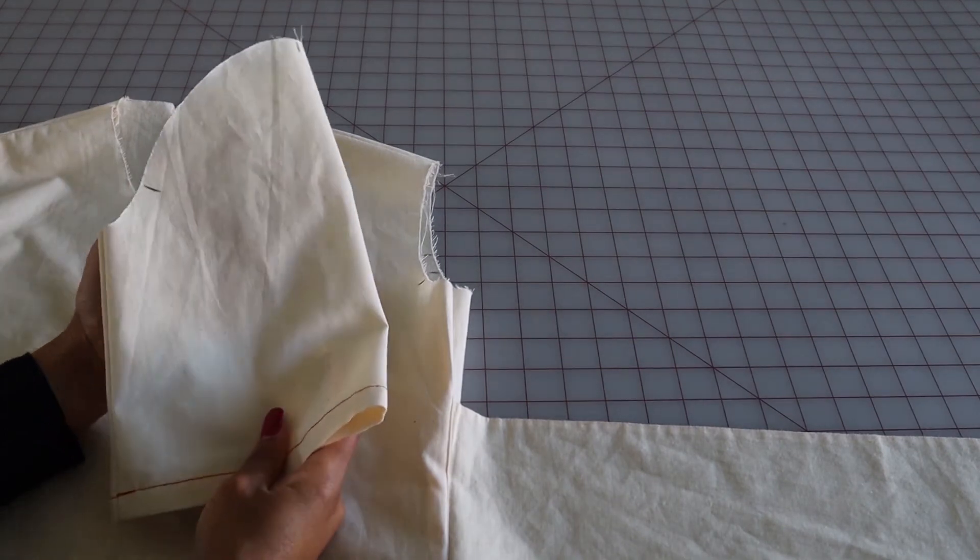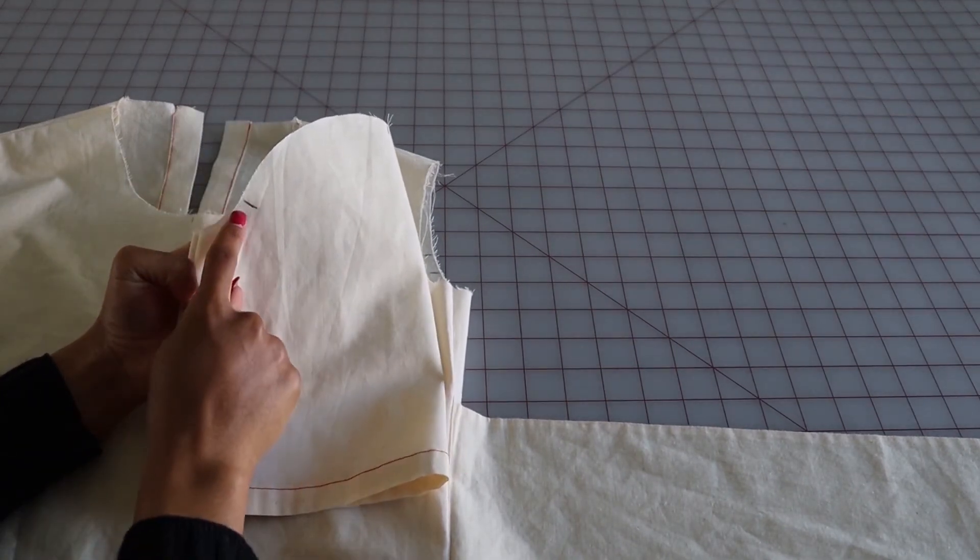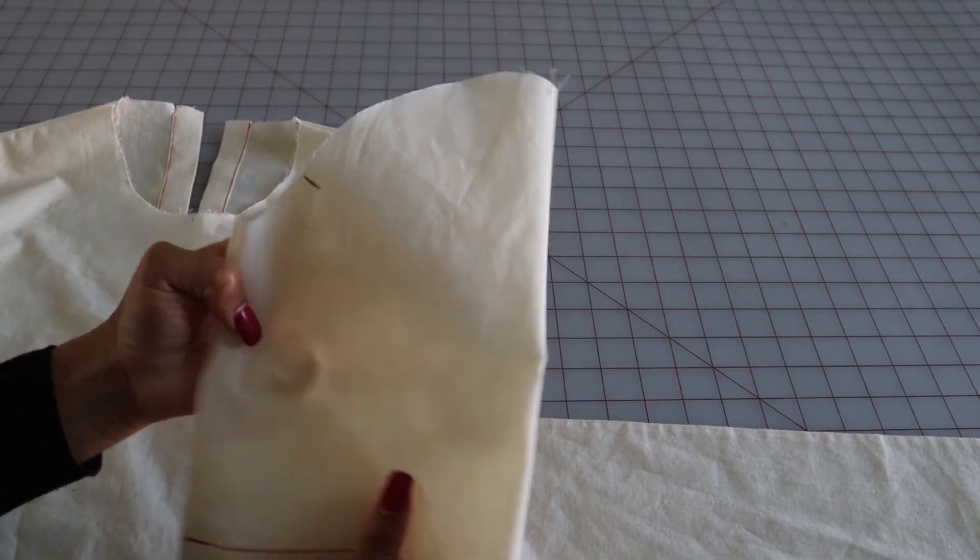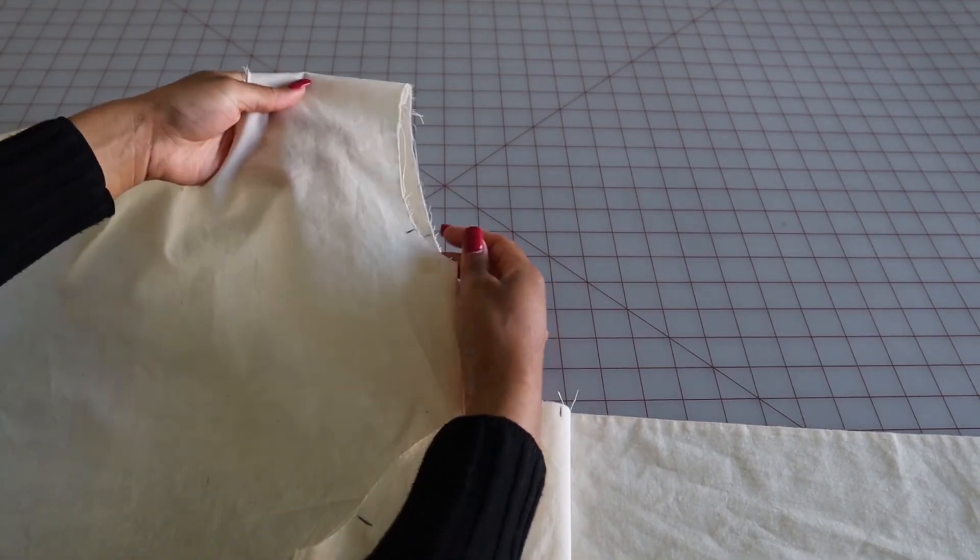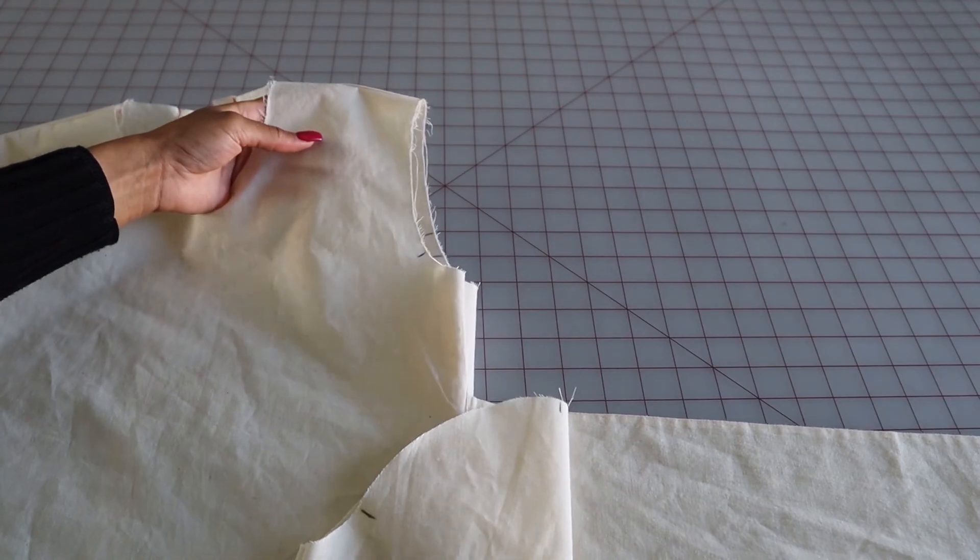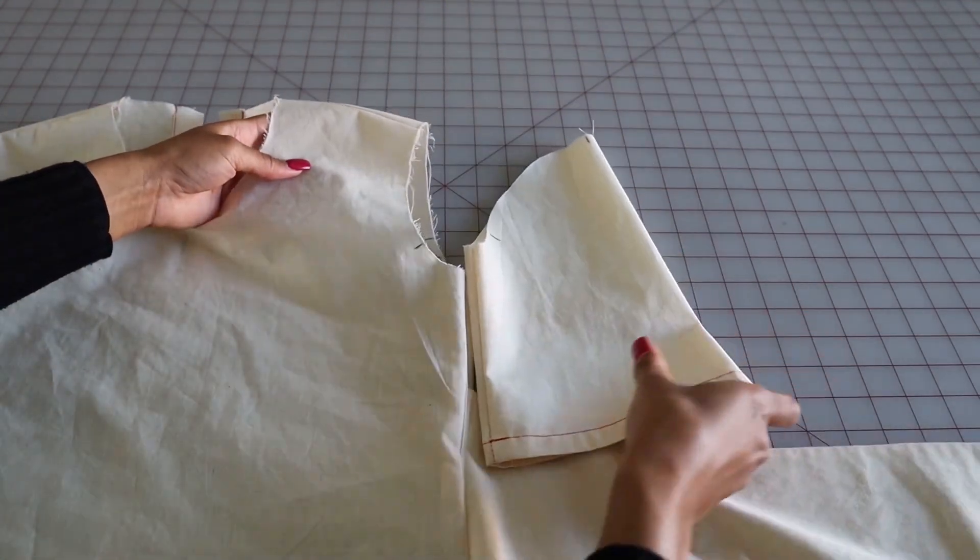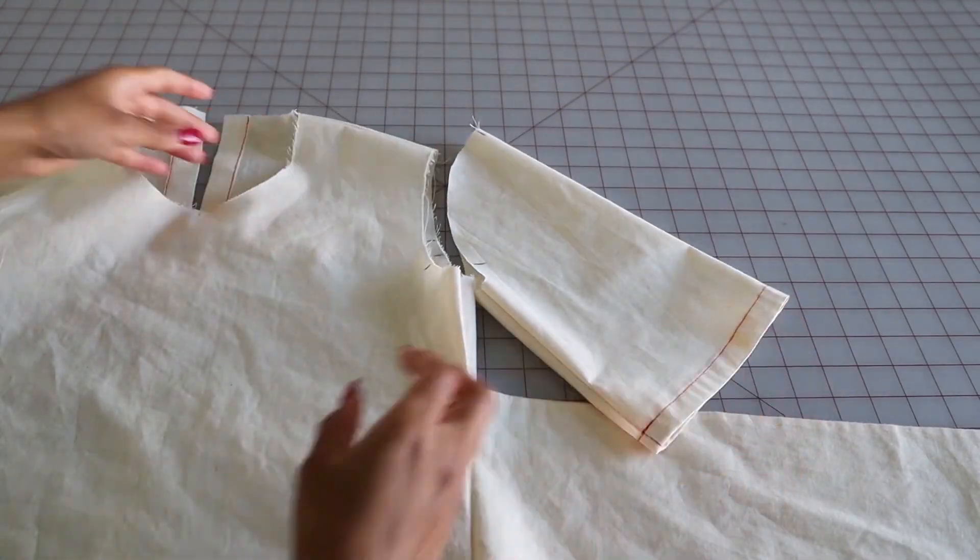Okay, so now go ahead and look at the other sleeve that we're going to be working on here. Again, very important: just make sure that that front notch is corresponding with the front notch of your bodice. That's how you know you have the right sleeve. Okay.